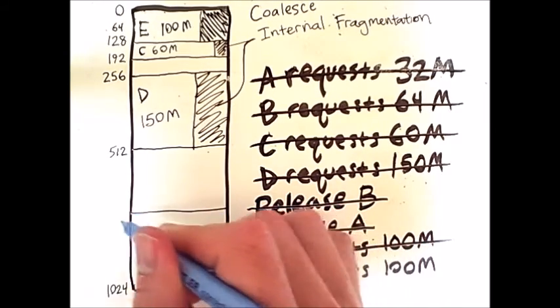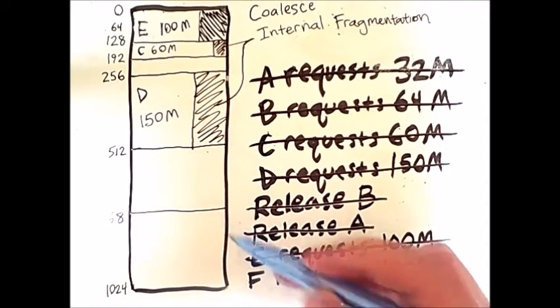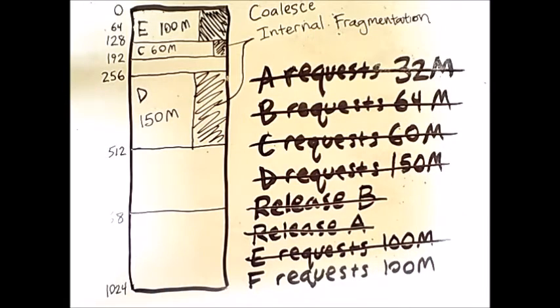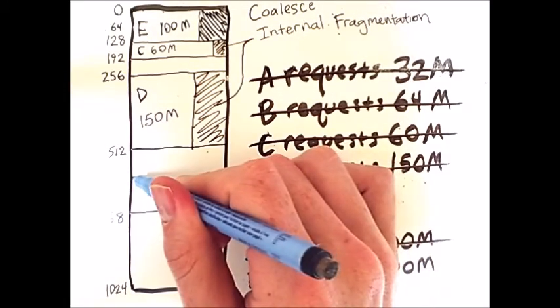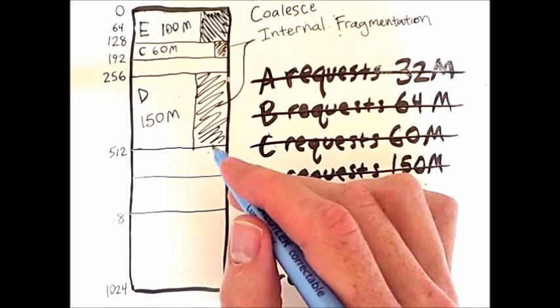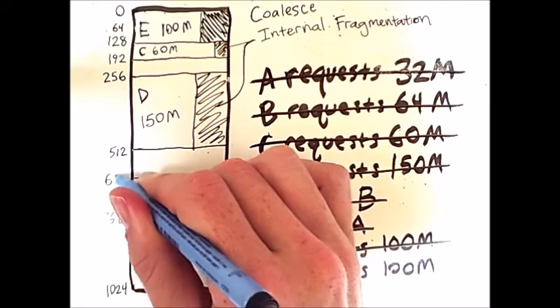So from 512, we go to the halfway point between 512 and 1024, which is 768. And we have two regions of size 256. Now 256 is too large for this request. So from this point, we then go up and split this region of memory into two 128 megabyte regions.